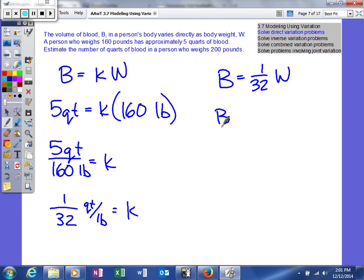So we'll say B equals 1 over 32 quarts per pound times 200 pounds.